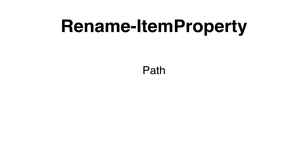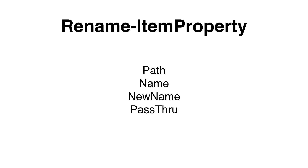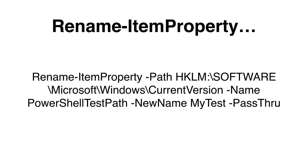If we would like to rename a key or value in the registry, we can do so using the Rename-ItemProperty cmdlet. We need to specify the path to the key we would like to rename, the name of the value to rename, and the new name. Optionally, we can specify the PassThrough parameter, which will return what actually happened while renaming the value.